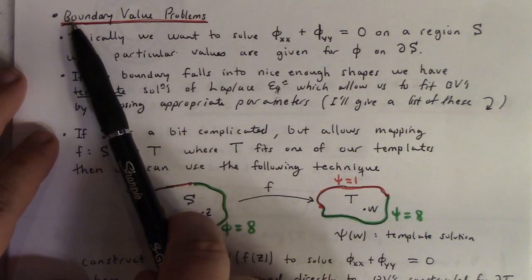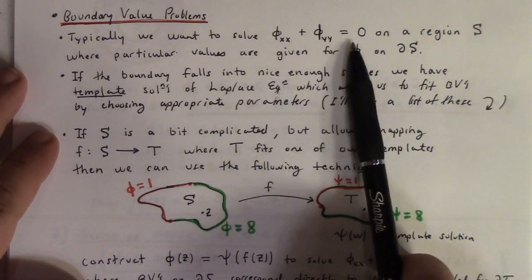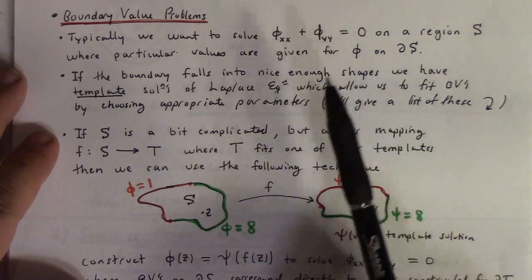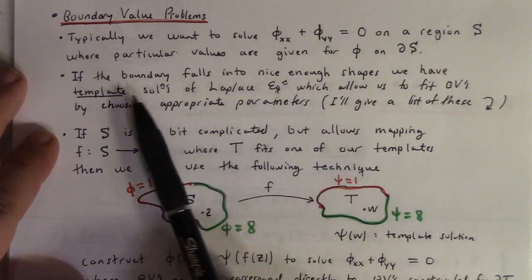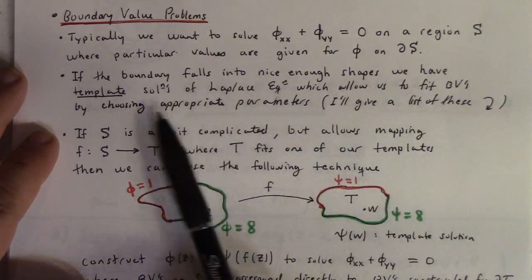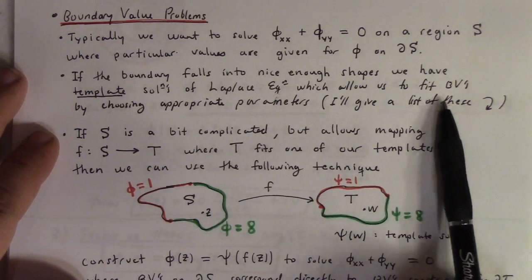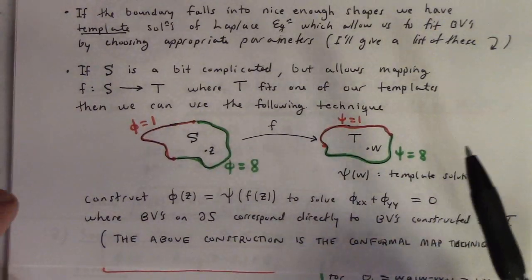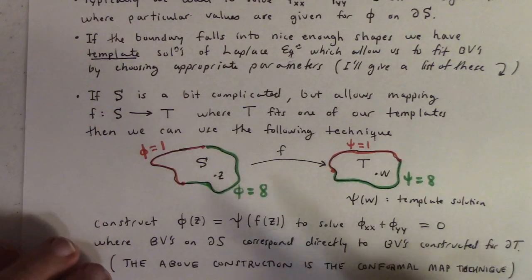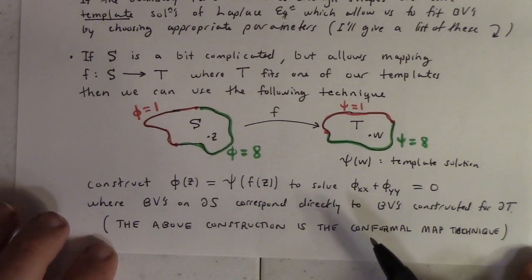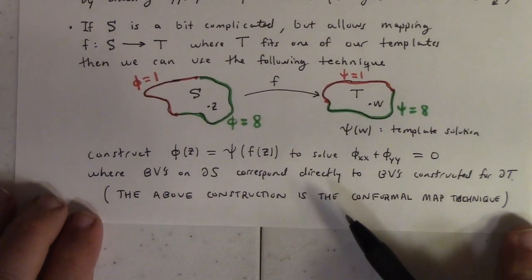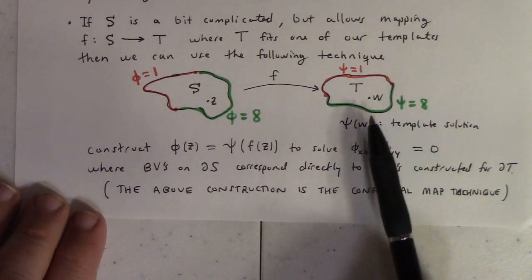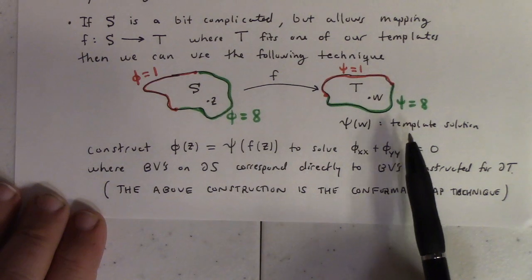We're interested in solving boundary value problems — solve Laplace's equation on a region S where particular values are given for the solution on the boundary of S. If the boundary falls into a nice enough shape, we have template solutions that allow us to fit boundary values by choosing appropriate parameters. However, if the region is more complicated but can be mapped to one of those nice template regions, we can use a trick: take the complicated region, map it to a simpler region, and find one of our template solutions there.